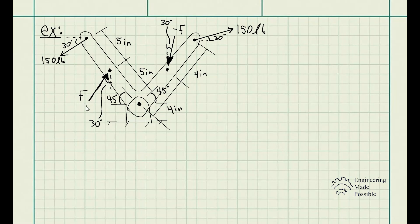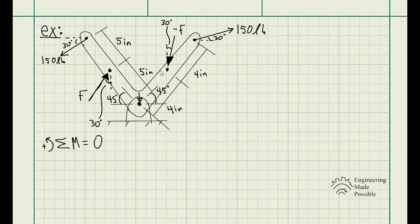We want the resultant couple moment on the crank to be zero — in other words, we want no rotation for this hinge. So the resultant of all the moments must be equal to zero. The sum of moments is equal to zero. My sign convention is counterclockwise equals positive, and moments are taken with respect to this hinge point.